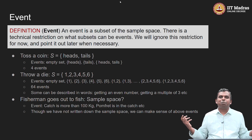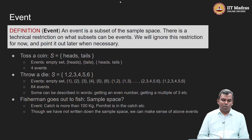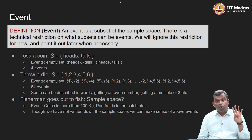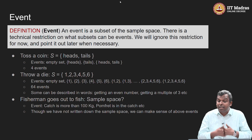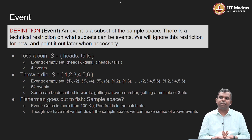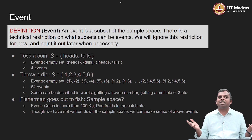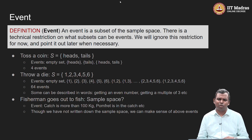Let us start looking at examples. From the coin-tossing experiment, we know the sample space is {heads, tails}. There are only four events here and all four are fine. You have the empty set — notice the empty set is an event, because the empty set is a subset of any set. The empty set is something like nothing happened: you toss a coin and nothing happened. It is maybe not very interesting, but it is good to have it for completion of our theory.